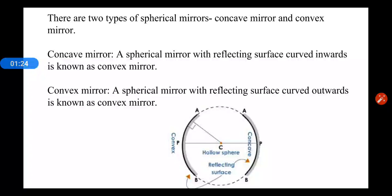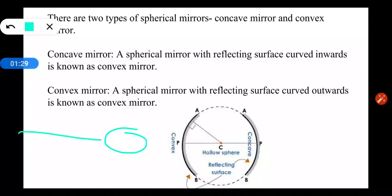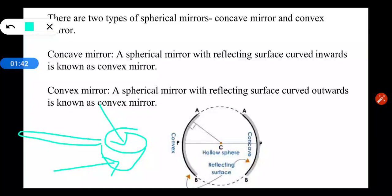We can also take the example of a spoon. The part of the spoon which is curved inward is concave, and the part which is curved outward is convex. So just by taking the simple example of a spoon we can understand the difference between a concave mirror and a convex mirror.